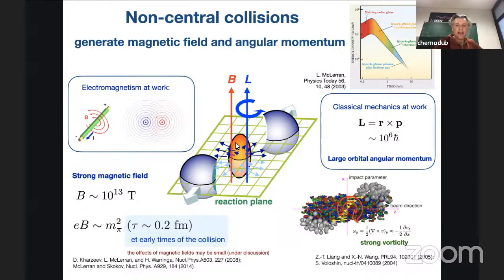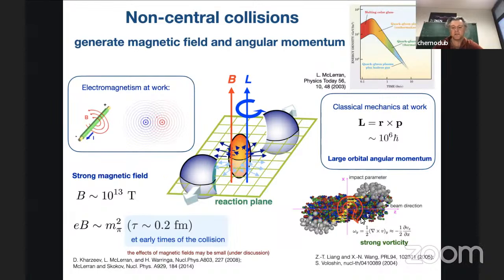Rotation occurs because some partons miss the target but some create the quark-gluon plasma phase. Classically, the rotational angular momentum is quite large — from one thousand to ten thousand ħ — so we can really speak about collectively rotating plasma. The timescale is very short, approximately three fermi divided by the speed of light, but it's enough to understand what happens inside the plasma.